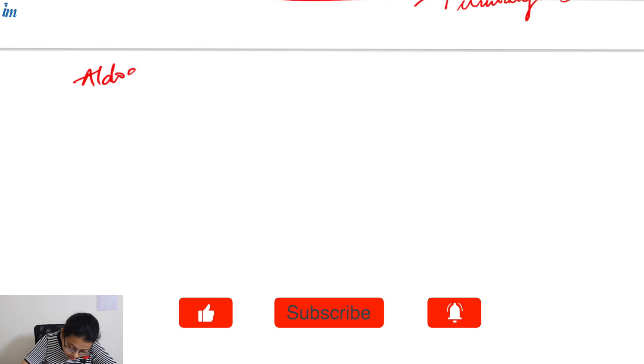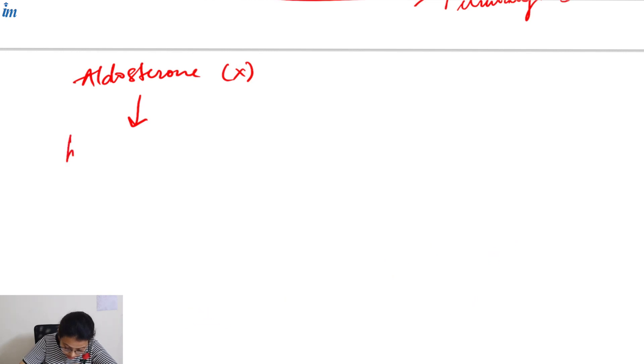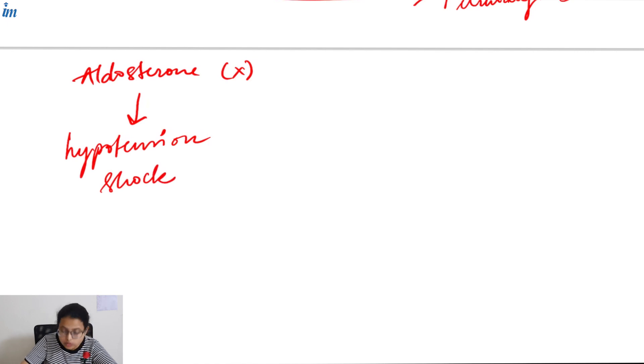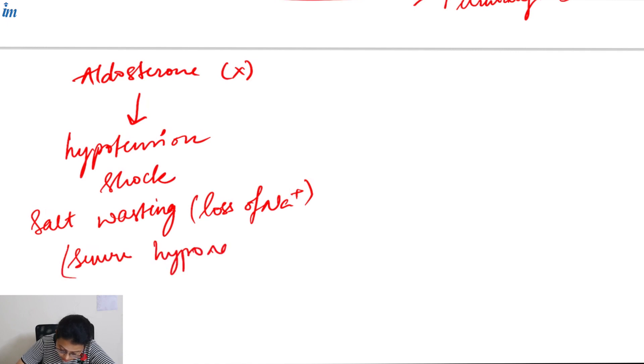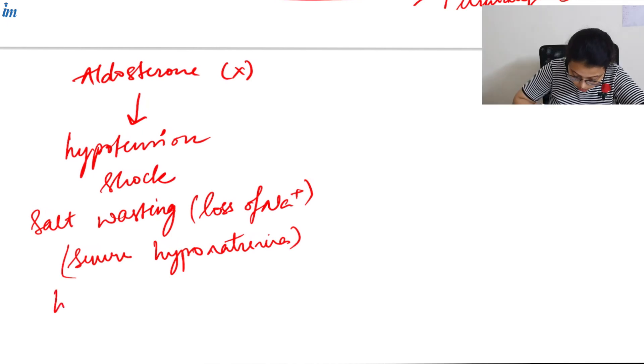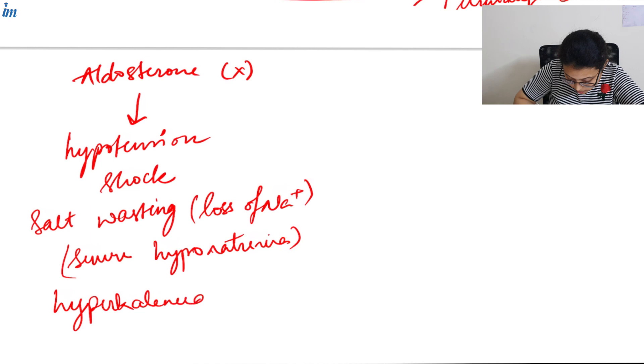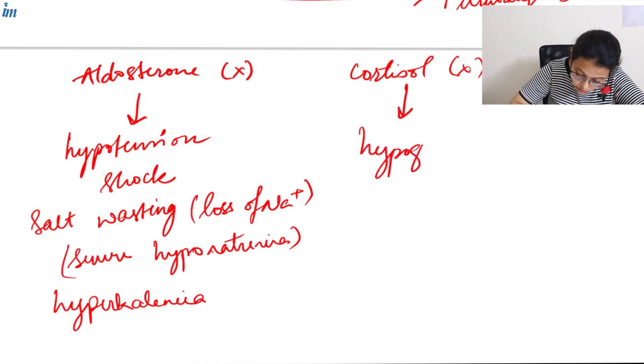This condition is clinically manifested in patients as aldosterone absence, which manifests as hypotension, shock, and most importantly, salt wasting. Aldosterone is normally responsible for sodium and water reabsorption. As aldosterone is absent, there is loss of sodium ions from the body and the patient suffers from severe hyponatremia. Also, hyperkalemia is seen. As cortisol is absent, the patient suffers from hypoglycemia.